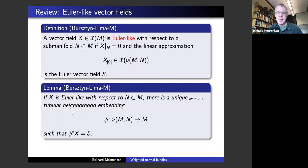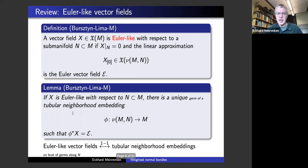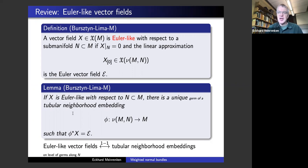This lemma tells you that there's a one-to-one correspondence between these Euler-like vector fields and tubular neighborhood embeddings — it's essentially the same thing, on the level of germs along the sub-manifold. It's really just a reformulation of the notion of tubular neighborhood embedding, but it's a very useful reformulation because often it's easier to come up with Euler-like vector fields satisfying the properties you need.